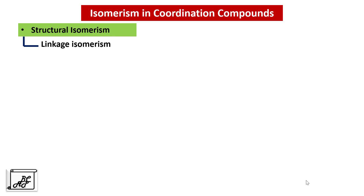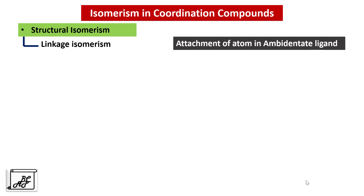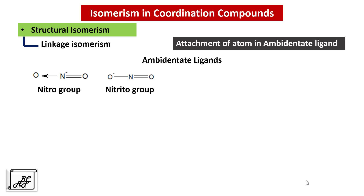Let's move to the next part of Structural Isomerism: Linkage Isomerism. In an earlier video we studied ambidentate ligands. The way in which the atom of the ambidentate ligand is attached to the central metal atom gives rise to Linkage Isomerism. For example, NO2 can coordinate as nitro (through nitrogen) or as nitrito (through oxygen). In the first example, cobalt is associated with the nitrogen from the NO2 group. In the second case, cobalt is associated with the oxygen of the nitrito group.